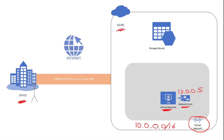Now, if you want to connect to this particular virtual machine, you can do so from your office by going over ExpressRoute or site-to-site VPN. What is not involved in that particular connection is the internet. You do not need an unencrypted connection. You do not need to go over the public internet. Your connection is always secure — you go over private ExpressRoute or site-to-site VPN.